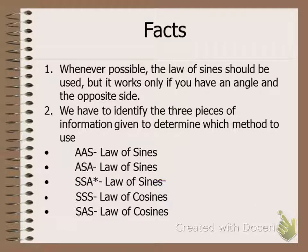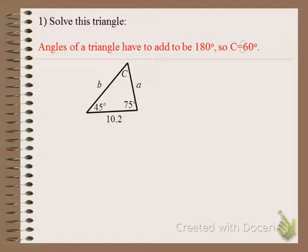This is going to be a time saver on tests. Let's solve this triangle — I'll make a sketch. Do you see anything we can immediately find? The third angle: if we're given two angles, we can find the third by subtracting 45 and 75 from 180, which gives us 60 degrees. So angle C equals 60 degrees.